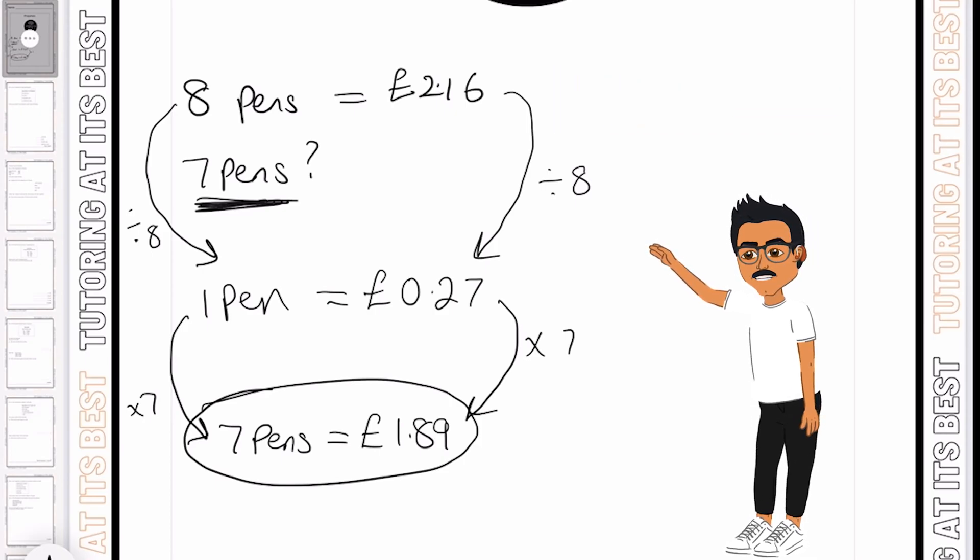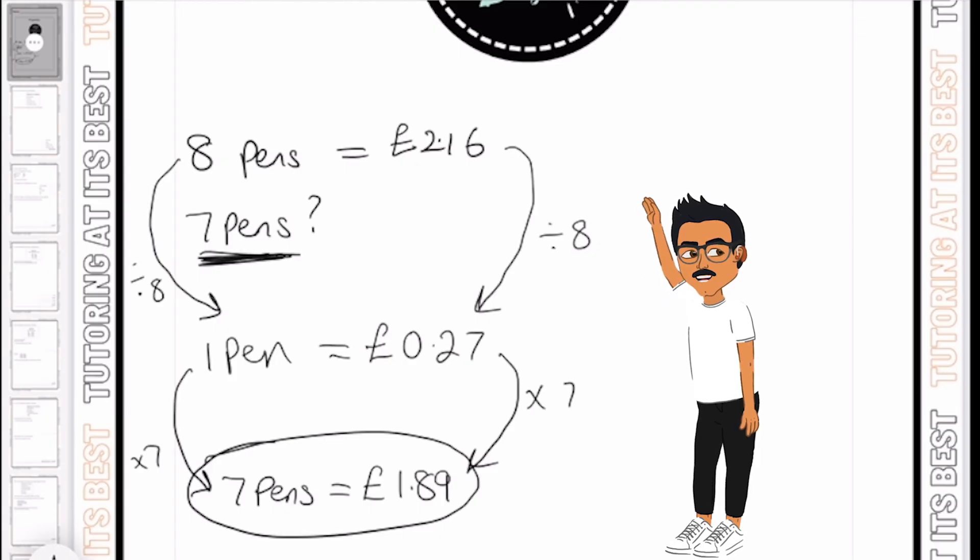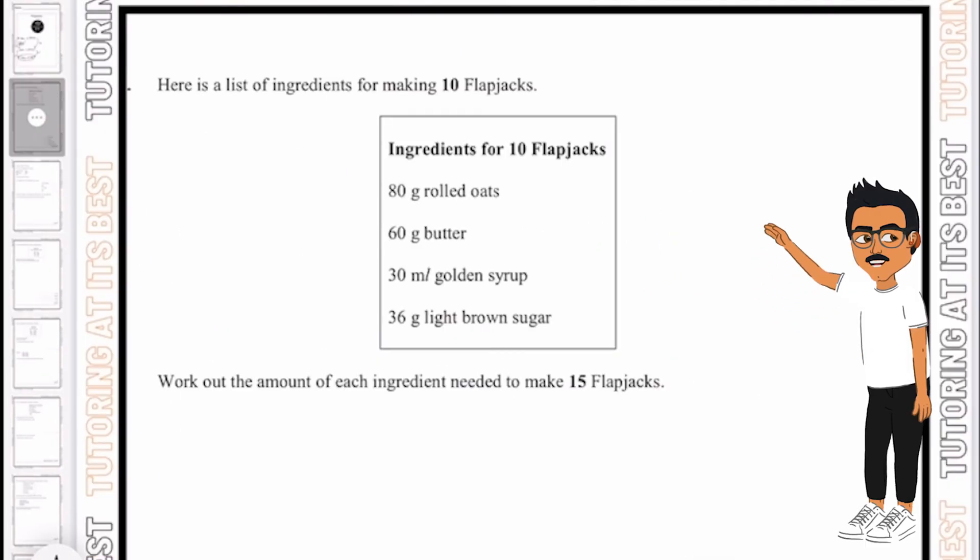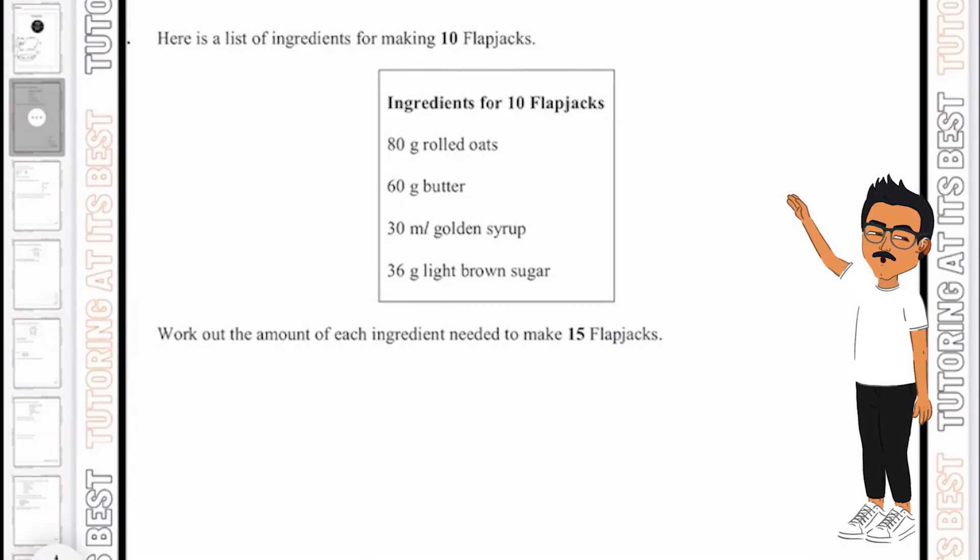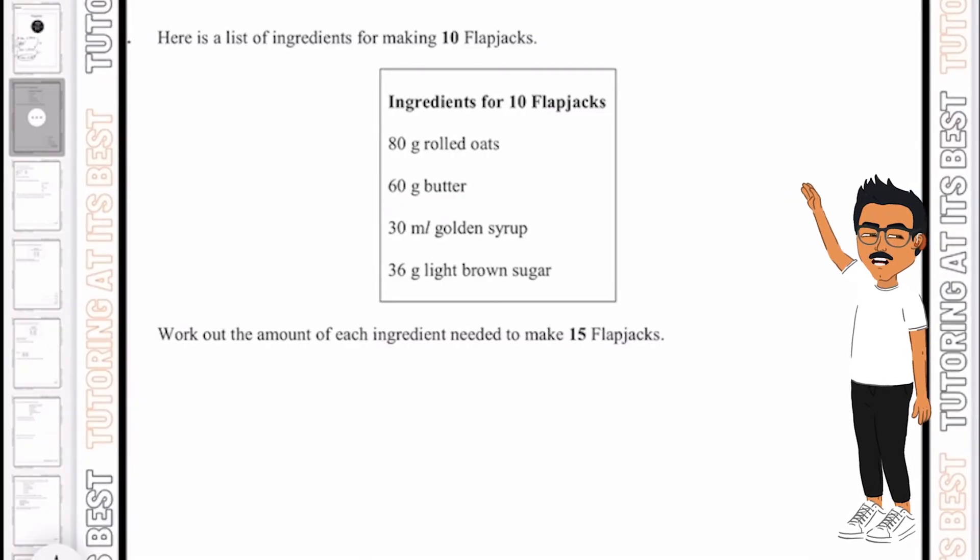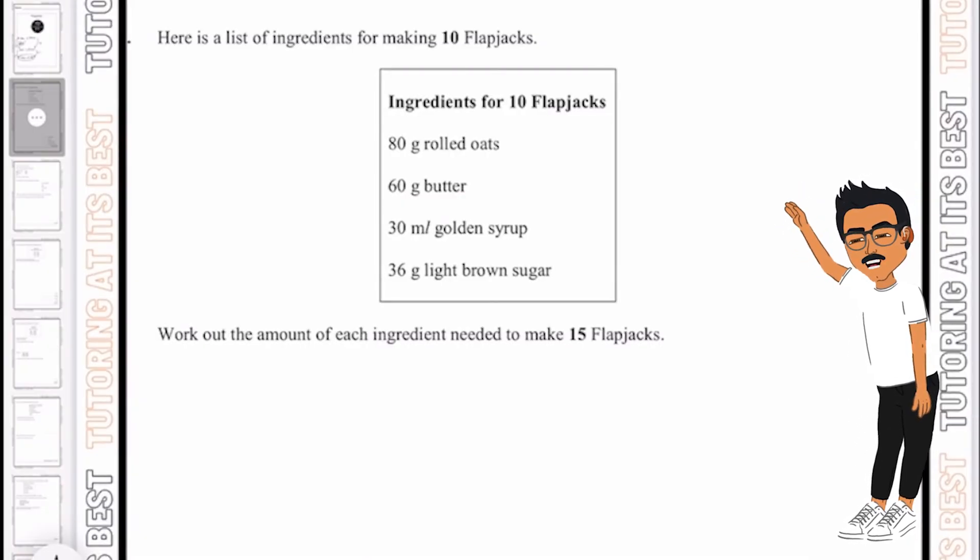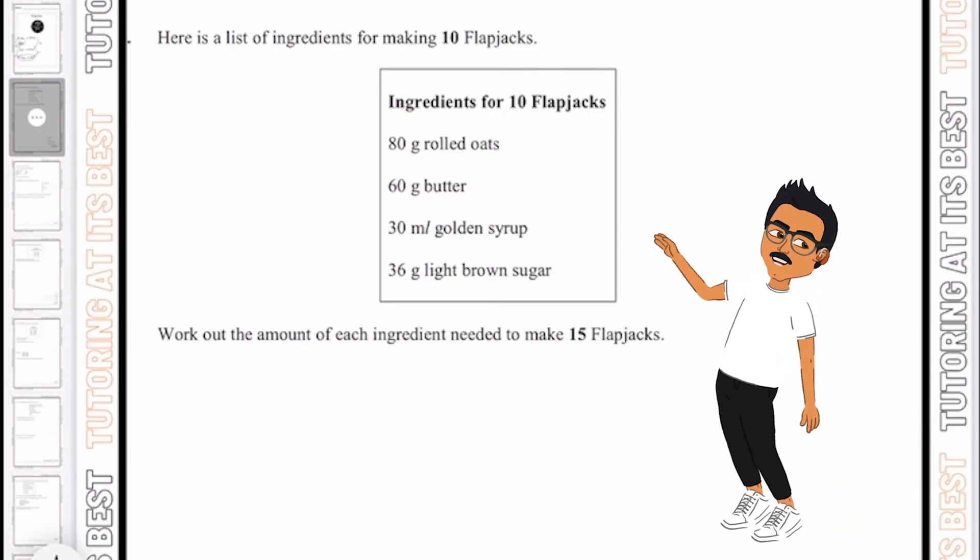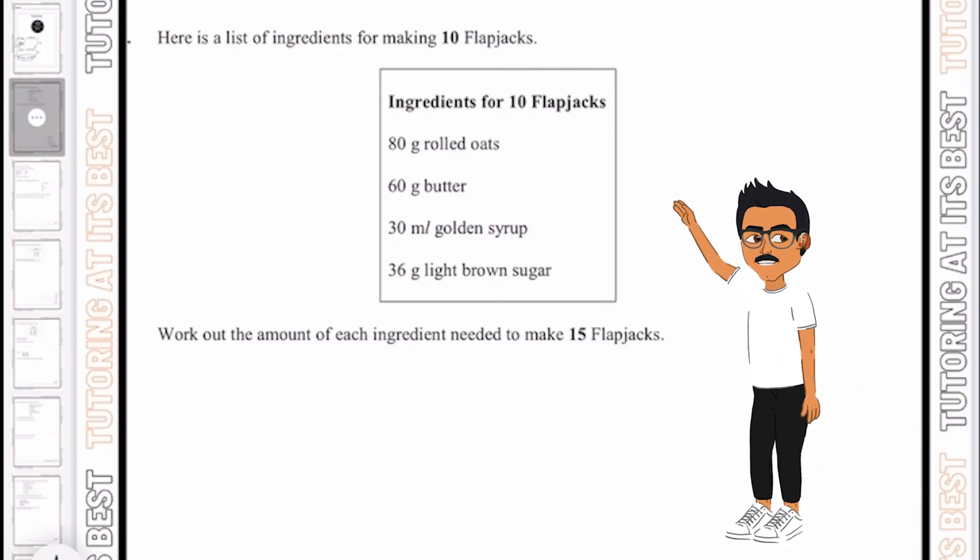I hope that example was clear. Let's now move over into the first question. So here is a list of ingredients for making 10 flapjacks. Let's work out the amount of each ingredient needed to make 15 flapjacks. So we need to find the multiplier to get from 10 flapjacks to 15.